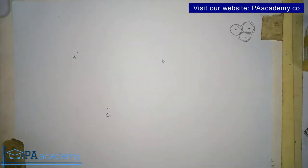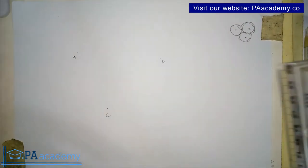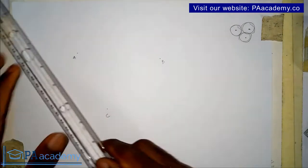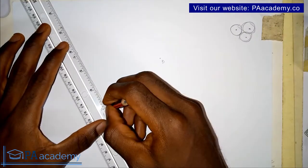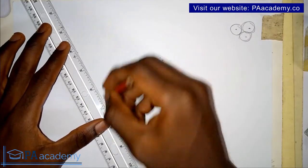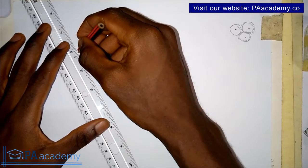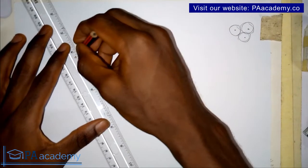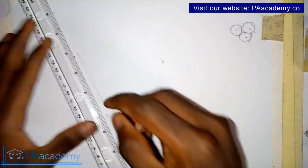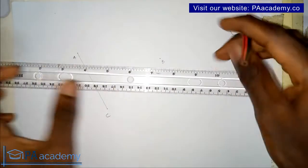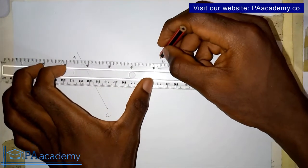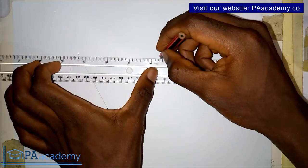What you are going to do next is connect these three points together, so you connect them and it will be looking like a triangle.